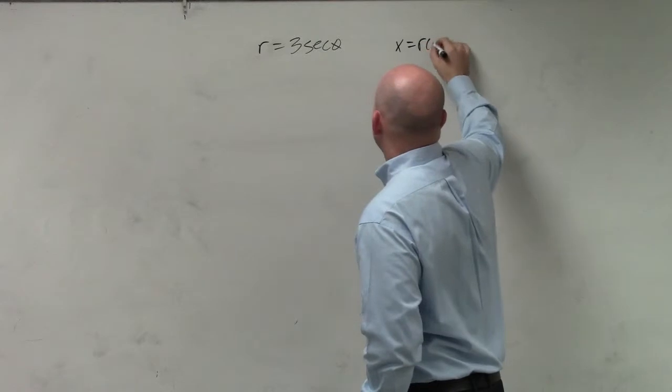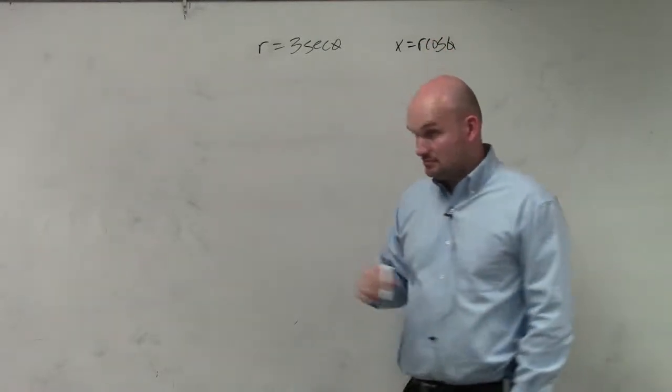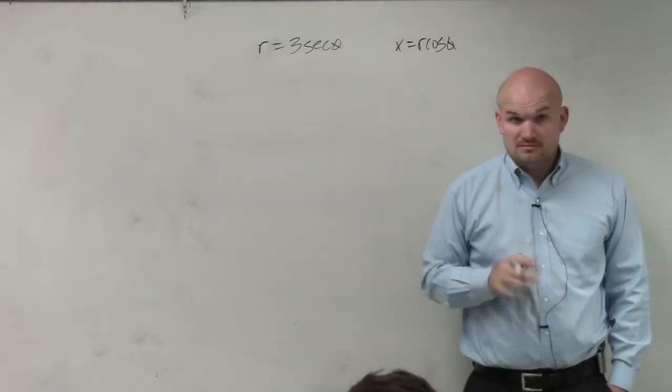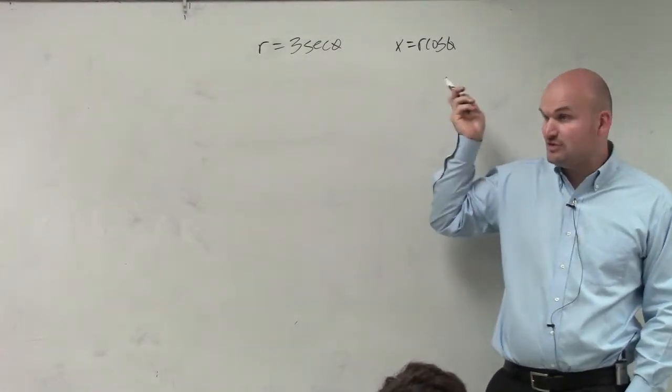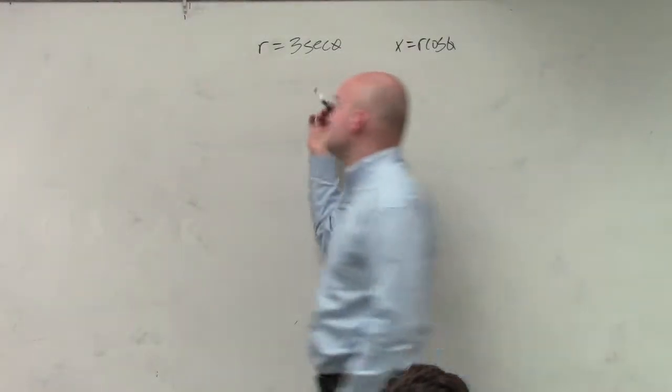We know that X equals R cosine of theta, correct? There is no such thing as secant that we know of as far as converting. So let's go and replace secant with cosine.